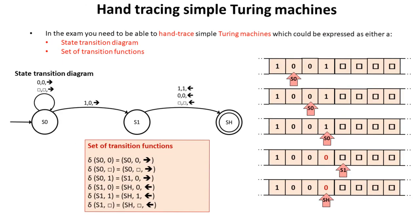One last thing you need to be able to do in the exam with Turing machines is to hand trace a simple Turing machine example. You should be able to hand trace it from either a state transition diagram or a set of transition functions.